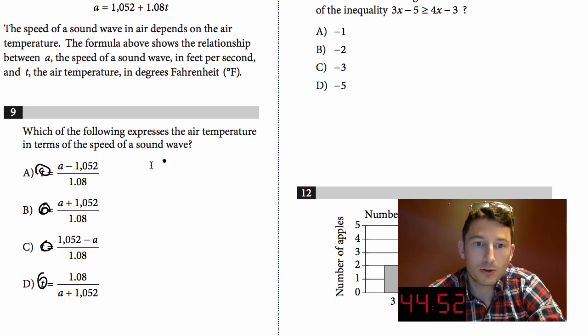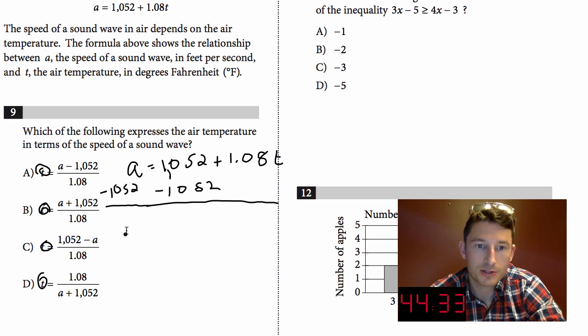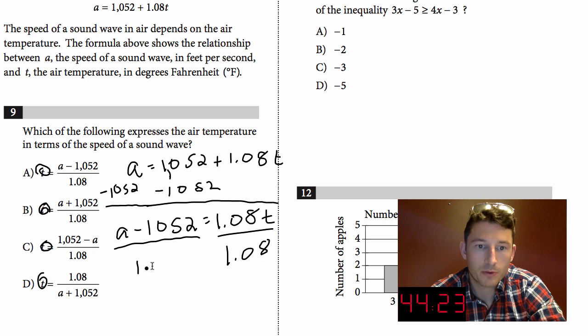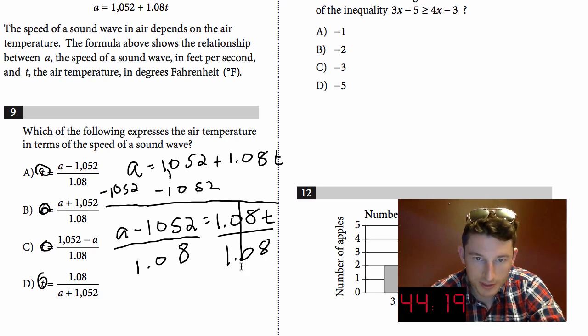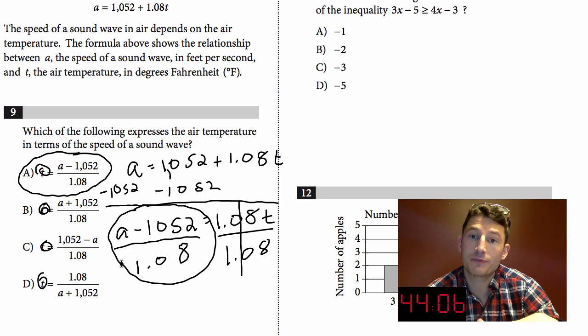What I notice right away is my equation started off with a equals and now everything has t equals. So everything is t, so my goal for this problem is to get t by itself. First thing you always do is your subtraction and your addition. So it's a minus 1,052 equals 1.08t. I'm going to divide by 1.08 on both sides, and that crosses out. That's my answer: a minus 1,052 over 1.08, which is right there. That's it. When you do these problems, do your addition and subtraction first, always, and then your division and multiplication.